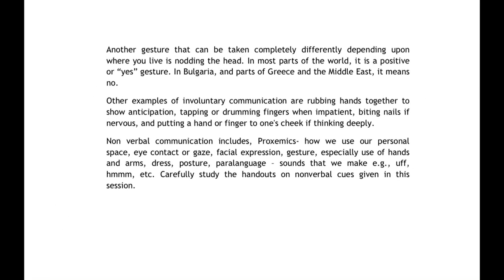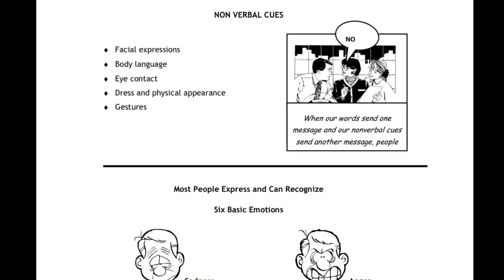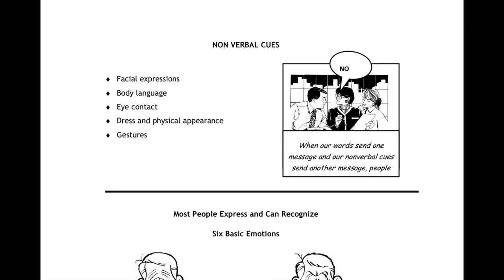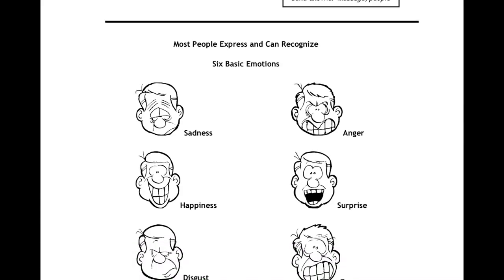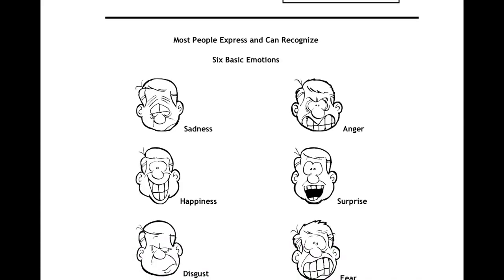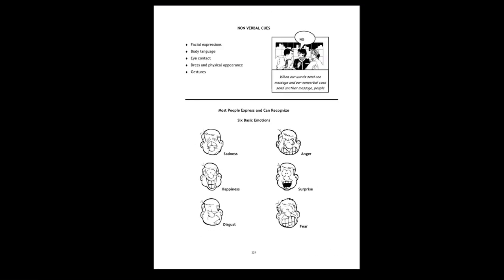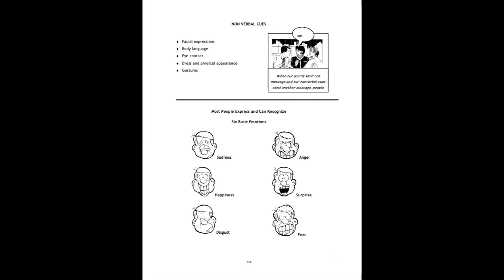Non-verbal cues you can use include: facial expressions, body language, eye contact, dress or physical appearance, and gestures. Most people can express and recognize 6 basic emotions: sadness, happiness, disgust, anger, surprise, and fear. The expressions for these emotions are mostly the same across people.